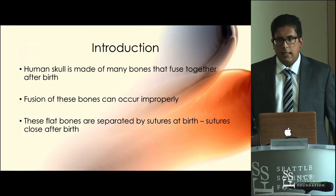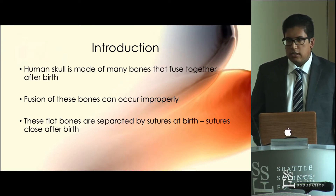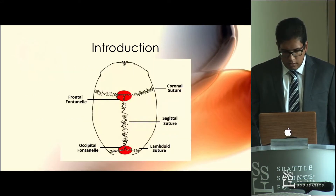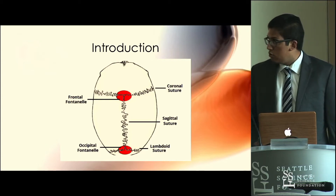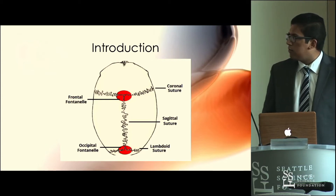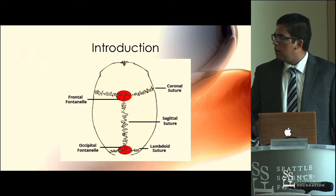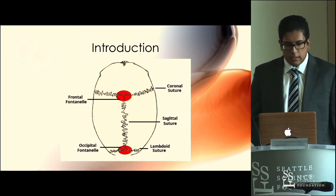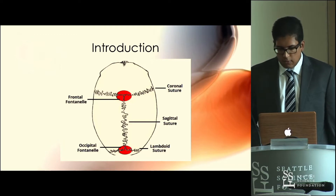At the junction of the sutures, we have what are called the fontanelles, and those fontanelles can also have delayed closure, which results in other conditions. This image outlines the major sutures of the skull: at the front we have the coronal suture going left to right, down the middle is the sagittal suture, and at the back is the lambdoid suture. Then we have the two fontanelles — the anterior or frontal fontanelle, and the posterior or occipital fontanelle.